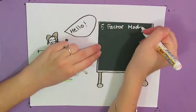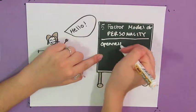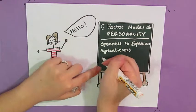They are openness to experience, agreeableness, conscientiousness, extroversion, and neuroticism.